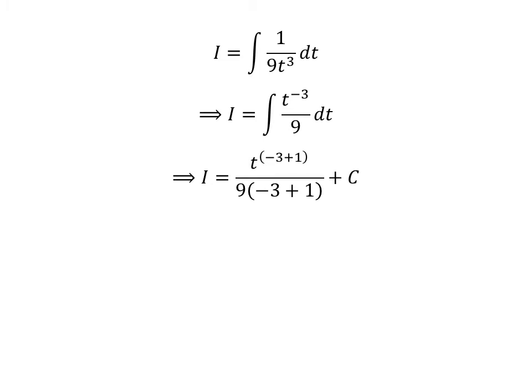We know the integral of t^n is equal to t^(n+1) divided by (n+1), so i equals t^(−3+1) divided by 9 times (−3+1), plus capital C. Capital C is the arbitrary constant of the indefinite integral — never forget to add this constant. Further simplification gives us i equals t^(−2) divided by minus 18, plus C.